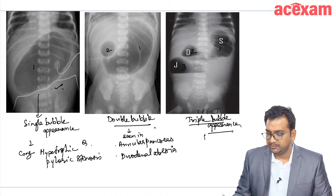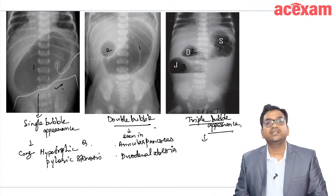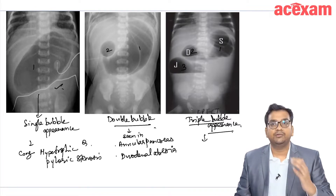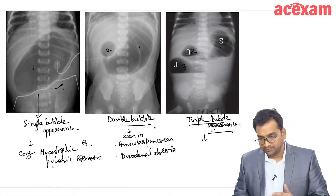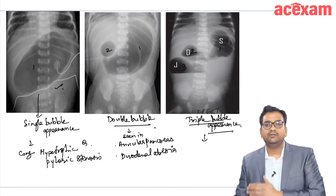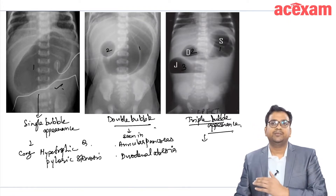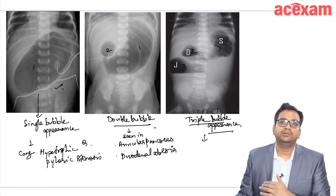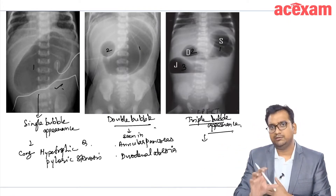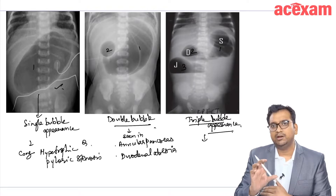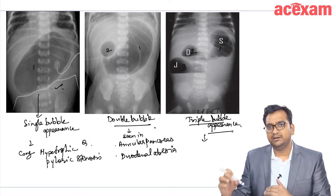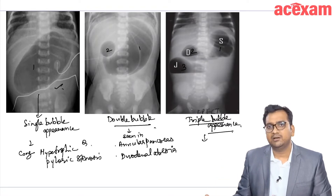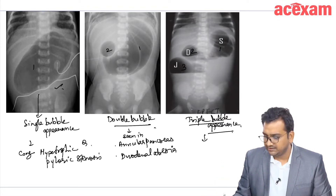A triple bubble is generally seen when there is obstruction at the level of the jejunum. You will be able to see one stomach bubble, one duodenal bubble, and one proximal jejunal bubble. That is seen in jejunal atresia.